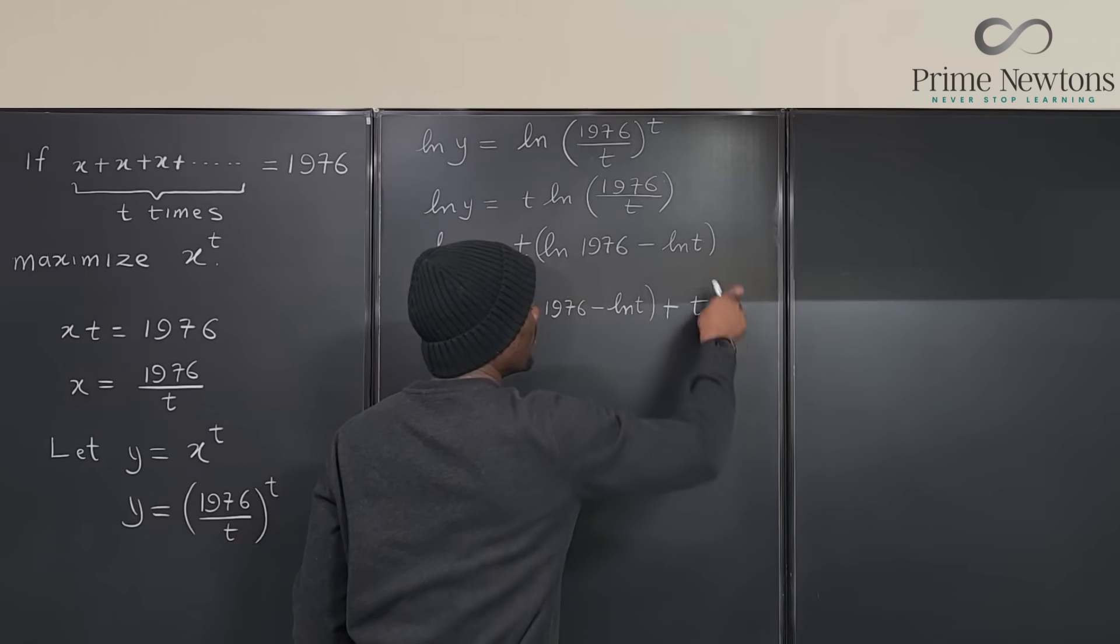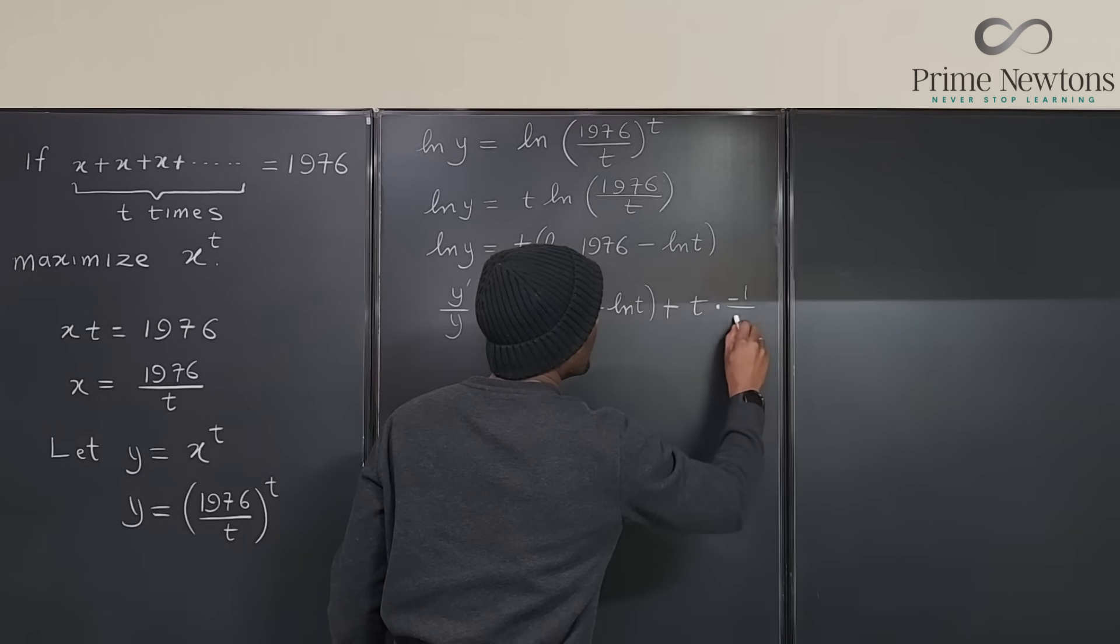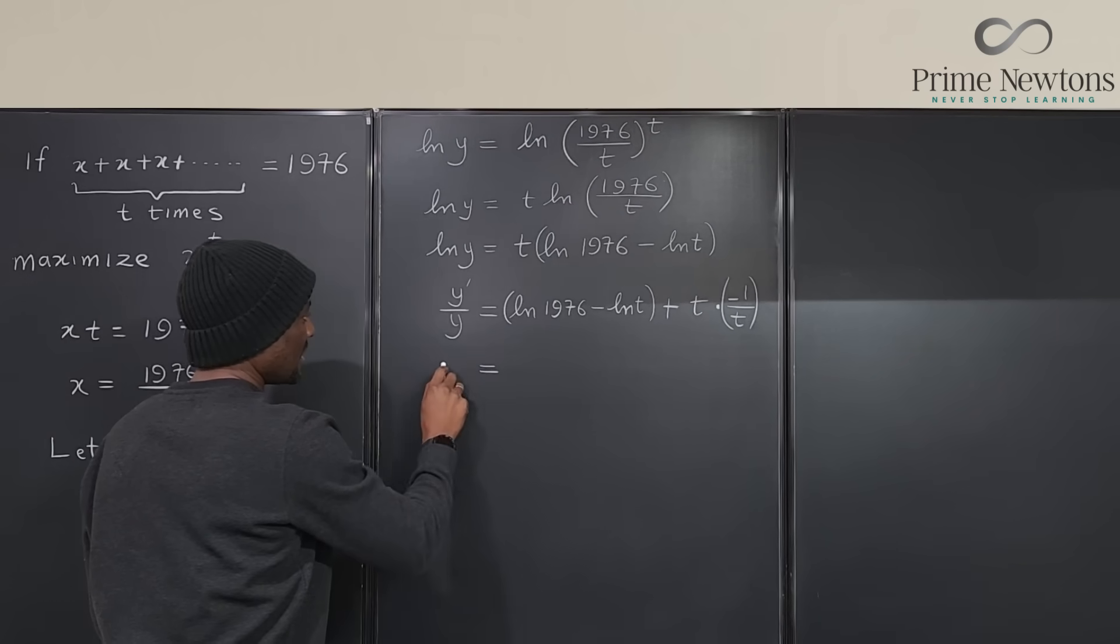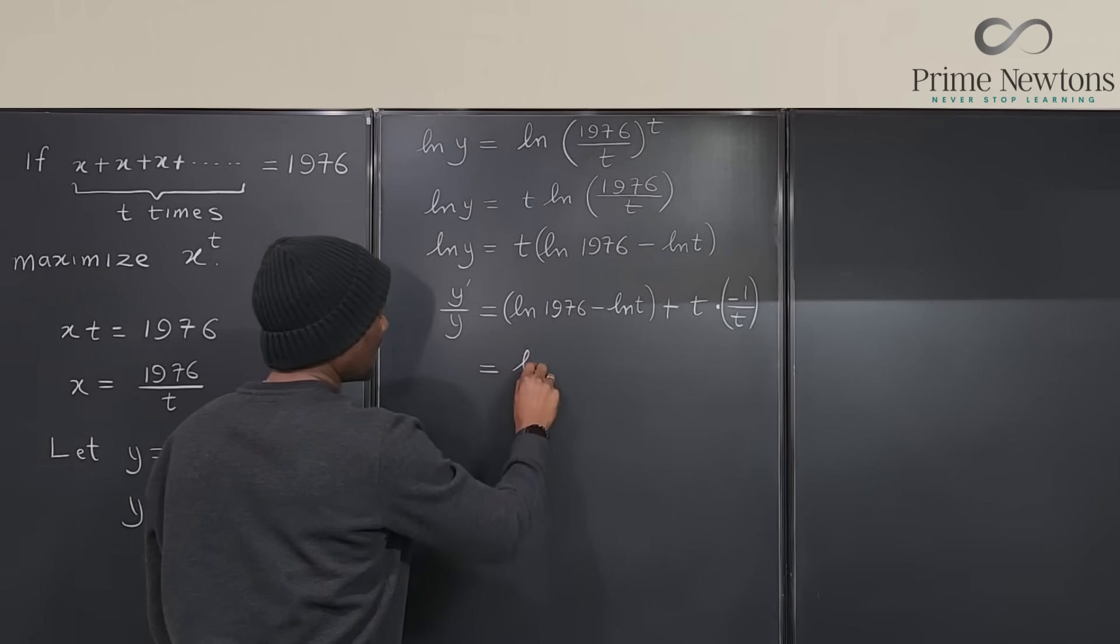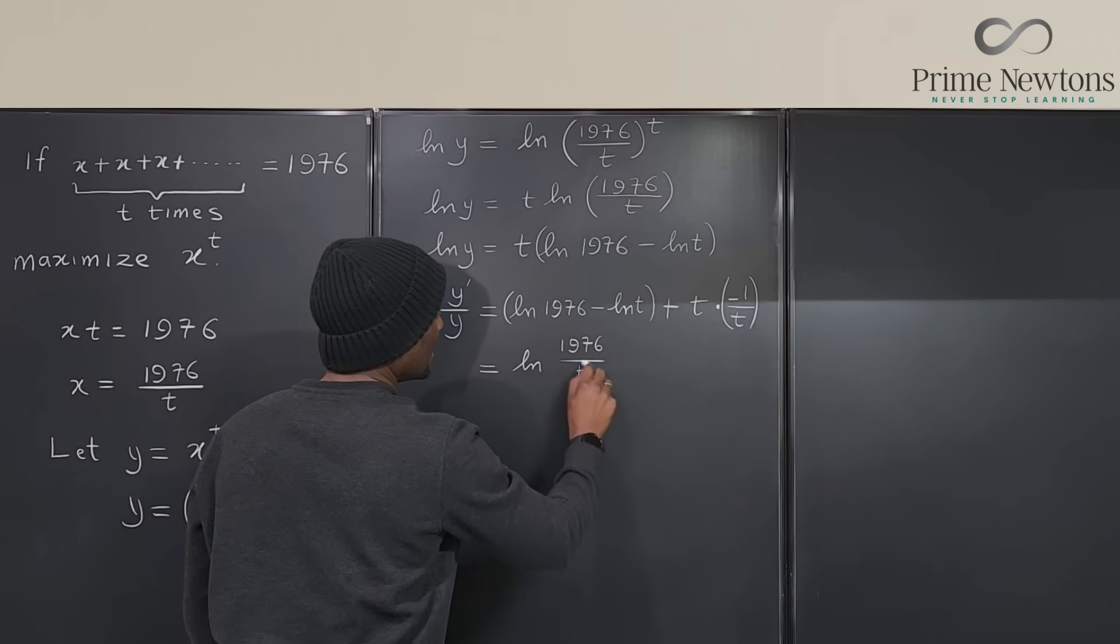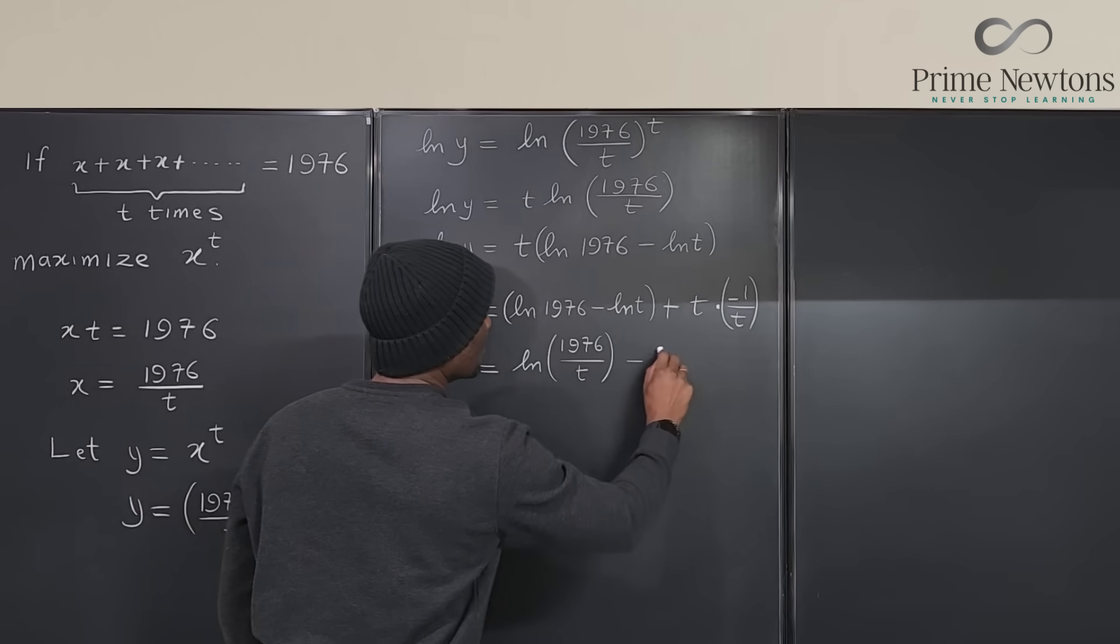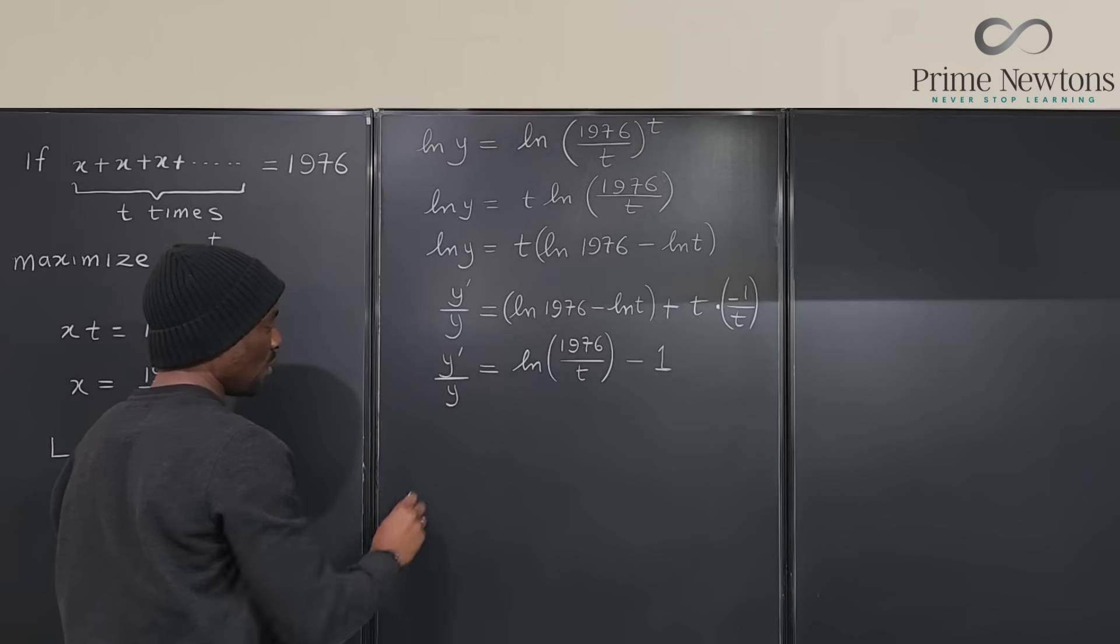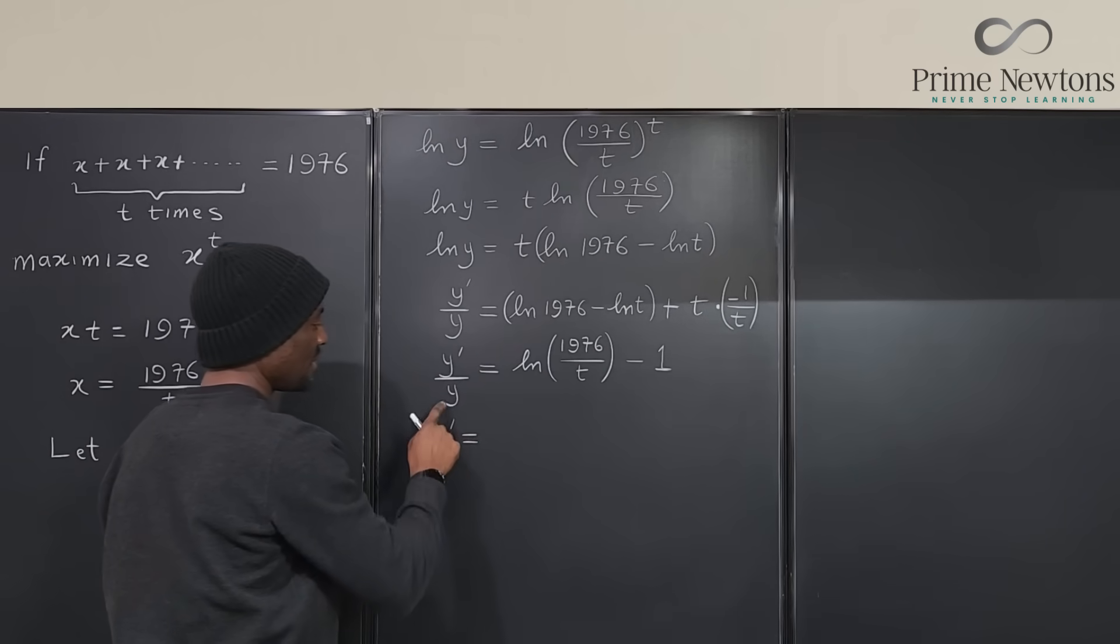Plus keep the first, differentiate the second. If I keep the first I'm going to get T, and if I differentiate the second this is going to give me zero and this is going to give me minus one over T times negative one over T. Let's put it in parenthesis. So watch, this is equal to LN, in fact I can rewrite this back as LN of 1976 over T minus one. That's my Y prime over Y.